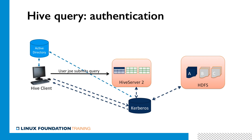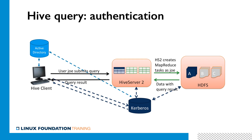The rest of the query flow is exactly like what we've seen before, with one interesting addition: every single network request will actually include the identity of whoever is making that request, and that identity will be based on the token received from the Kerberos database. The next question, of course, is that even if we can trust everything from an authentication standpoint, what happens if user Joe submits a query using data that he shouldn't really have access to? In order to solve that problem, let's introduce authorization.